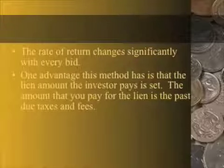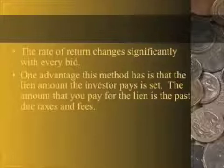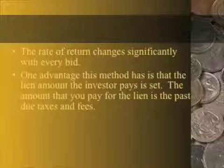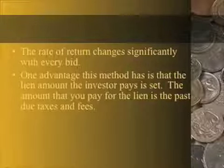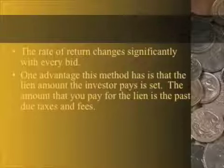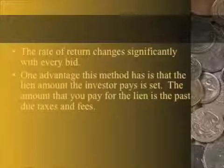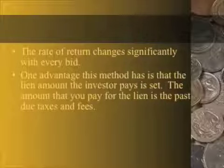There are some things to consider with a bidding down the interest rate system. The rate of return changes significantly with every single bid. If you are traveling to a sale to purchase tax liens, there's a big difference between making a 16% rate of return and making a 12% rate of return. You need to know exactly what your bottom dollar bid is — the lowest acceptable interest rate you're willing to accept before you walk away.